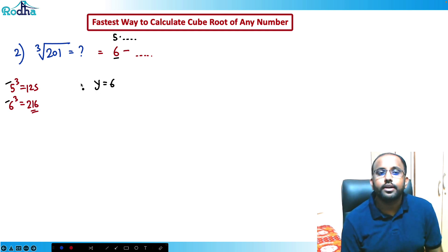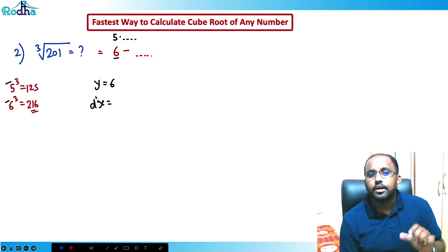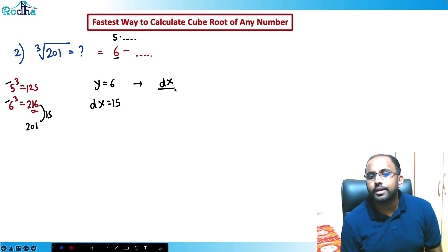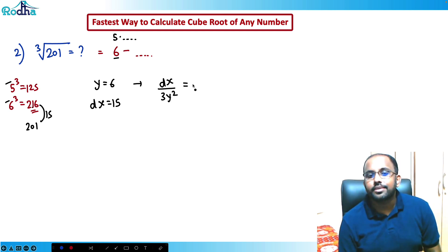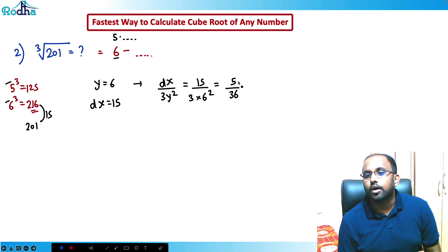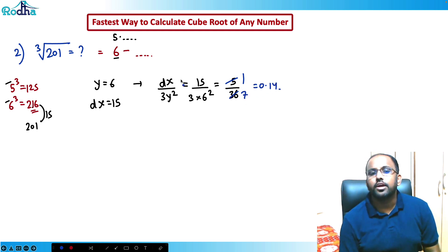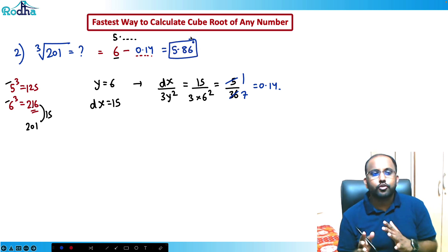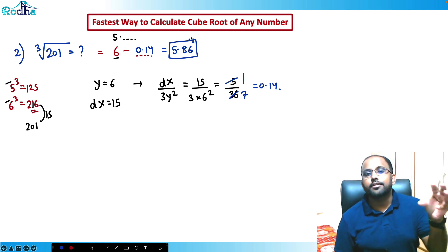dx is the difference: 216 − 201 = 15. Decimal part = dx / (3y²) = 15 / (3 × 36) = 15/108 = 5/36 ≈ 1/7 ≈ 0.14. So cube root of 201 ≈ 6 − 0.14 = 5.86. That's the answer — subtract the decimal part because the nearest perfect cube is above the number.